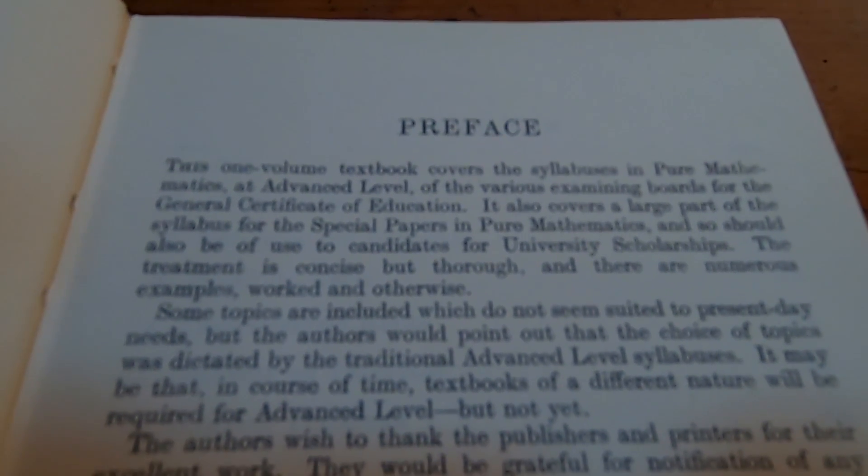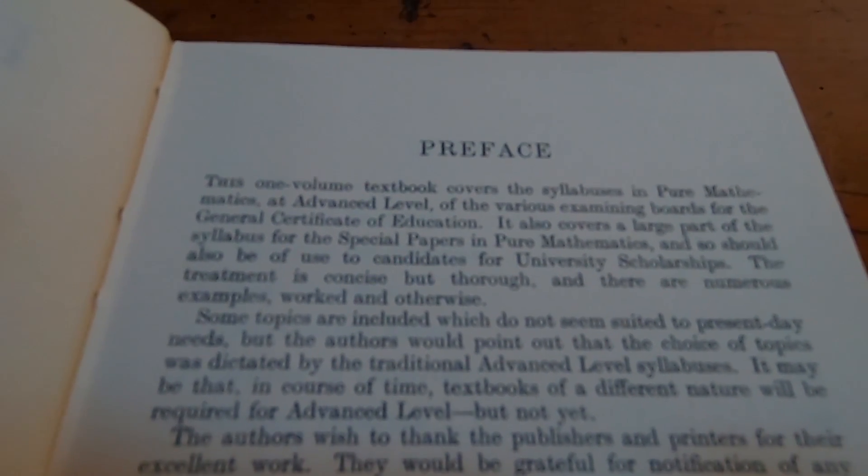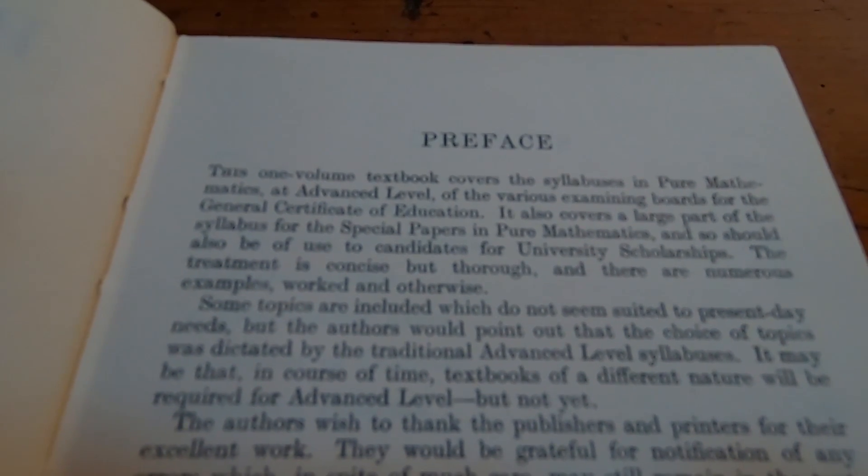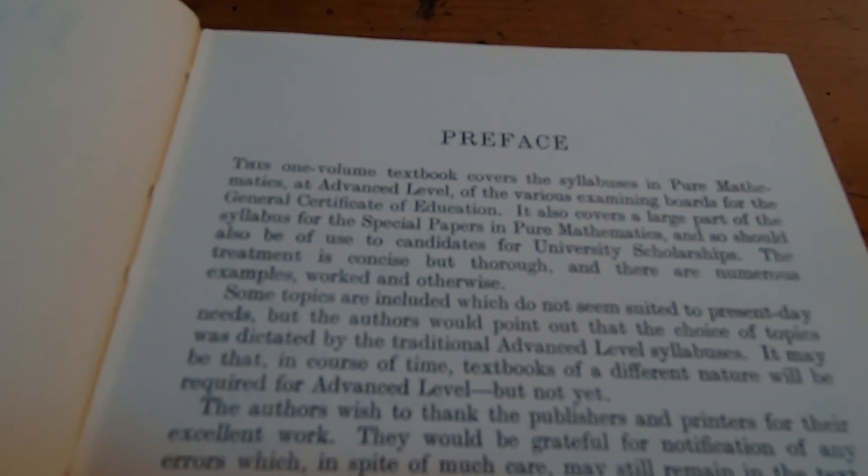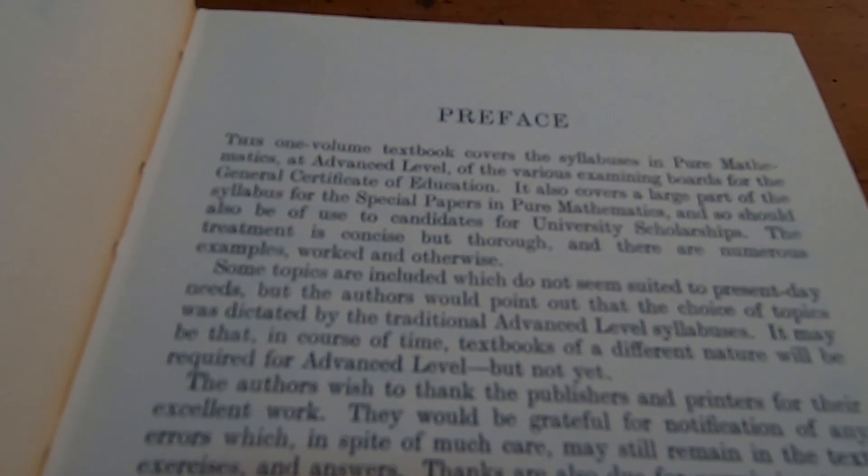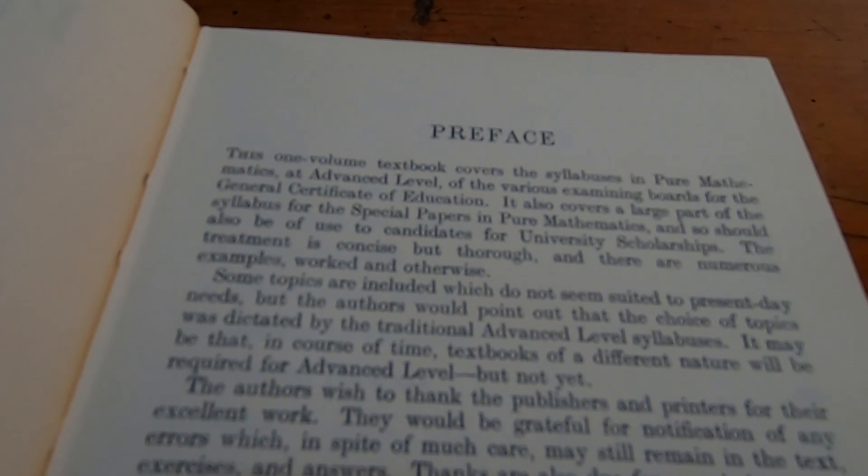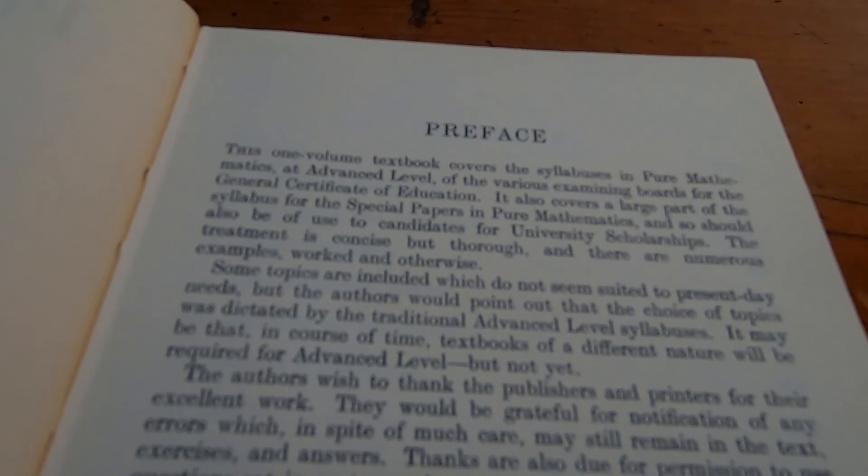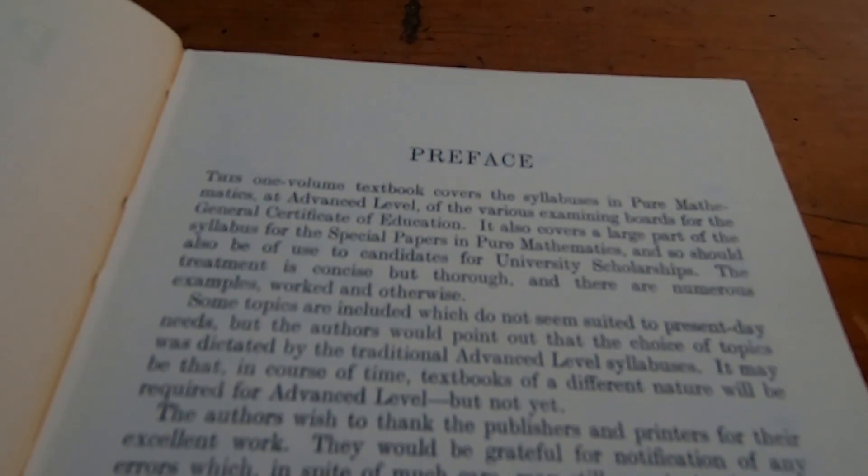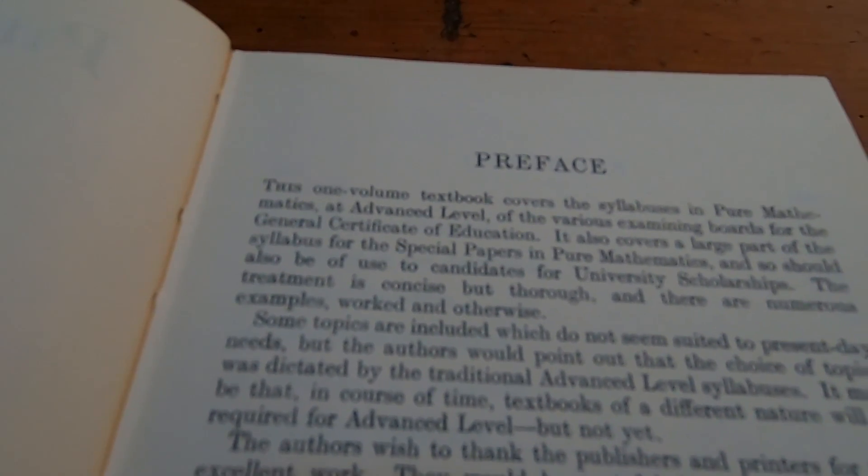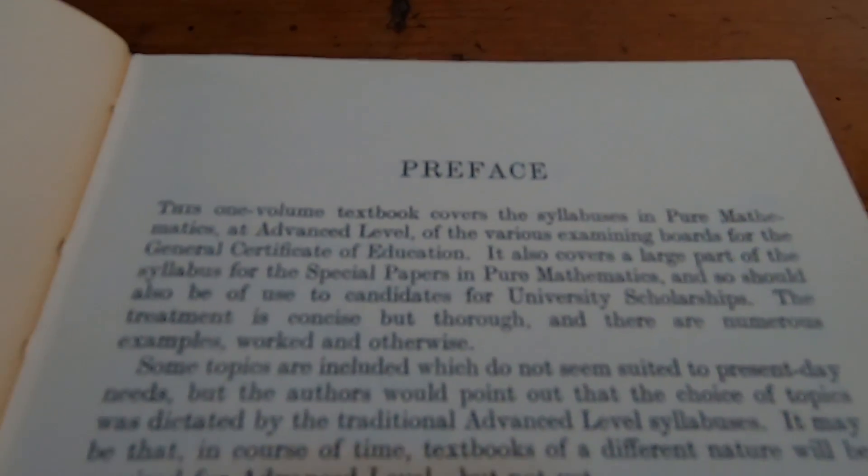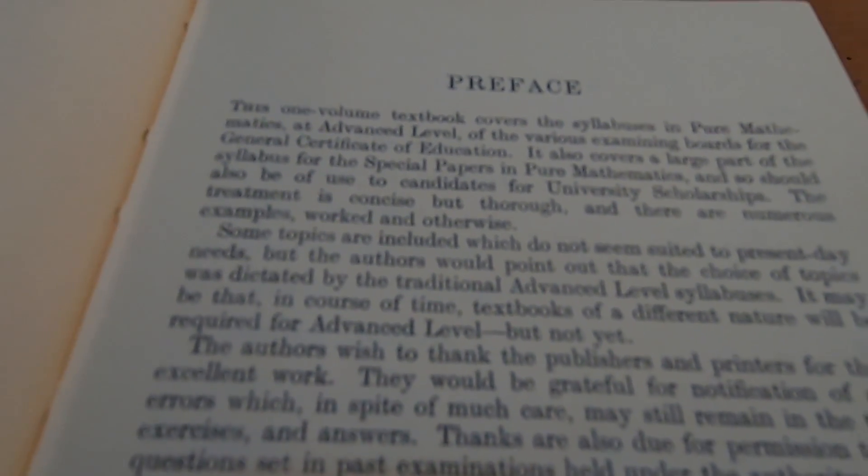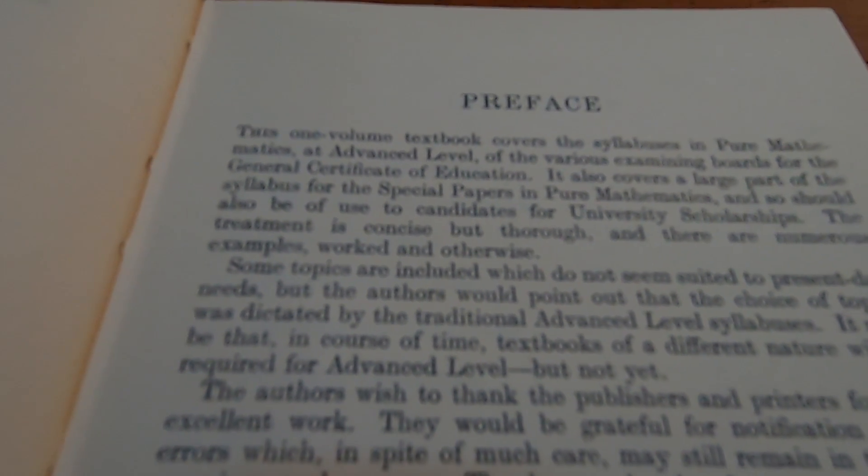So here is the preface. It says this one volume textbook covers the syllabuses in pure mathematics at advanced level of the various examining boards for the general certificate of education. It also covers a large part of the syllabus for the special papers in pure mathematics, and so it should also be of use to candidates for university scholarships. The treatment is concise but thorough. So that I do agree with. It is very thorough and it is very concise.